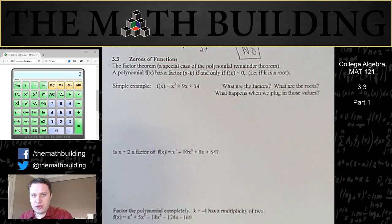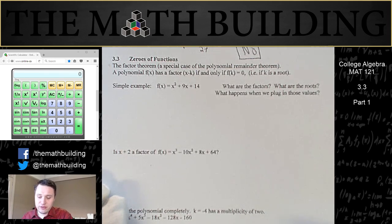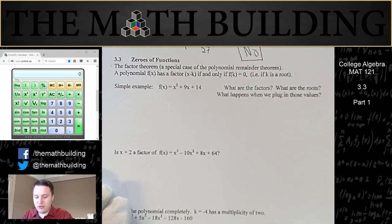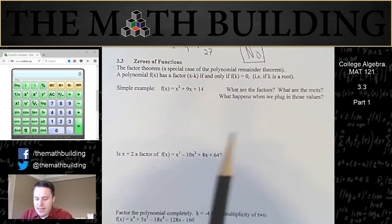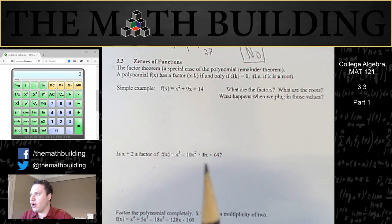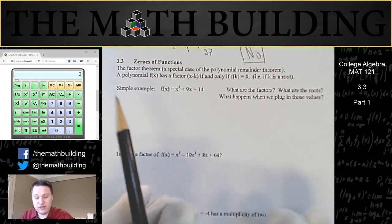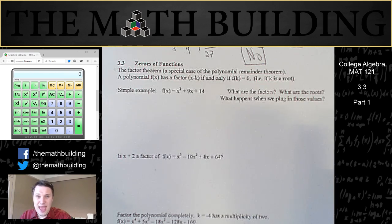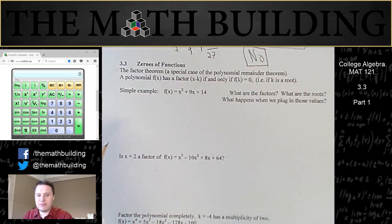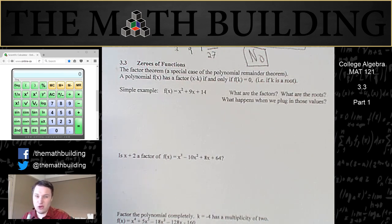Hello there. Welcome to College Algebra section 3.3. Unfortunately, this is one of the hardest sections in the class. My name is Gregory Carlson, and I'm going to show you how to find the zeros of any functions. After this section, you're going to be able to solve any polynomial — any at all. Even something that has 100 terms and 100 potential answers, you're going to know how to solve.